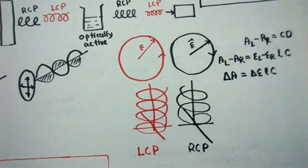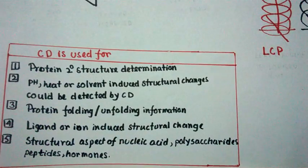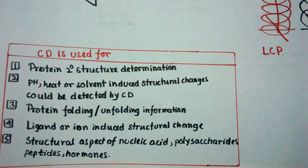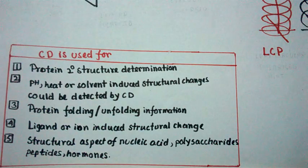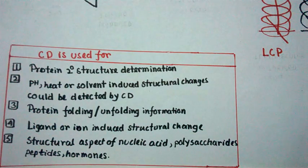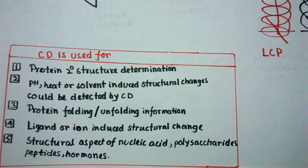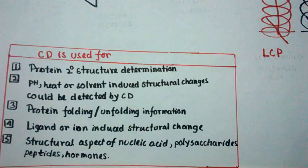CD spectroscopy is used for protein secondary structure determination — for instance, to determine how much alpha helix or beta-pleated sheet is present in a protein. pH-induced, heat-induced, or solvent-induced structural changes can also be detected. Protein folding and unfolding information can be predicted by circular dichroism. Ligand- or ion-induced structural changes in protein secondary structure can also be detected. Moreover, structural aspects of nucleic acids, polysaccharides, polypeptides, and hormones can also be derived from CD spectra.